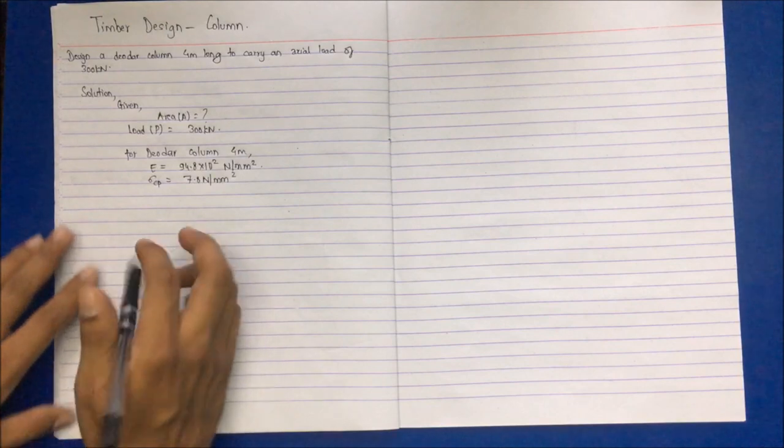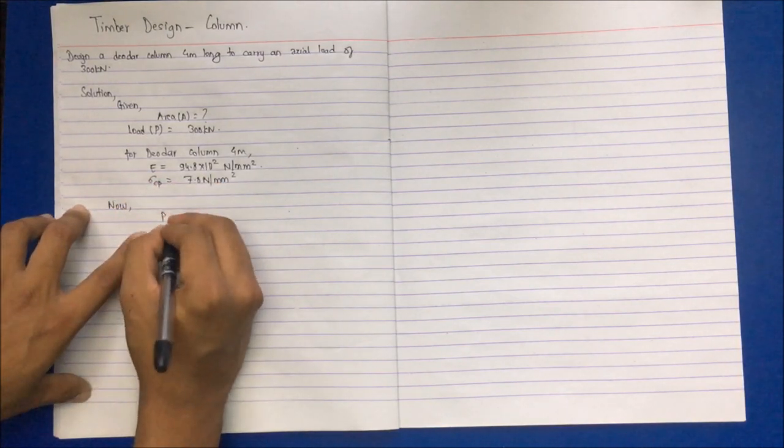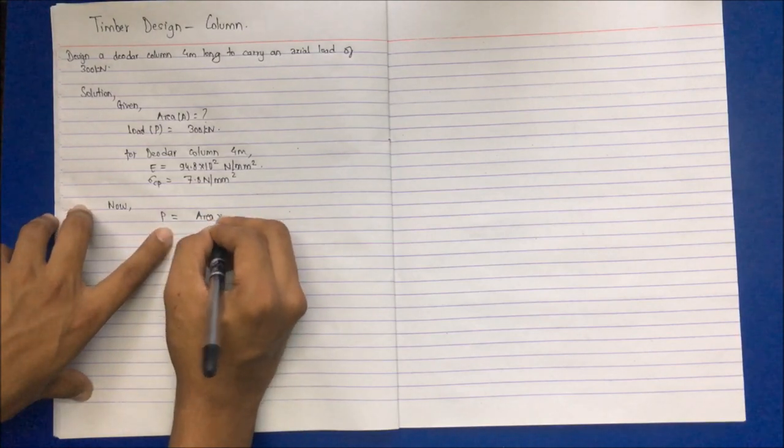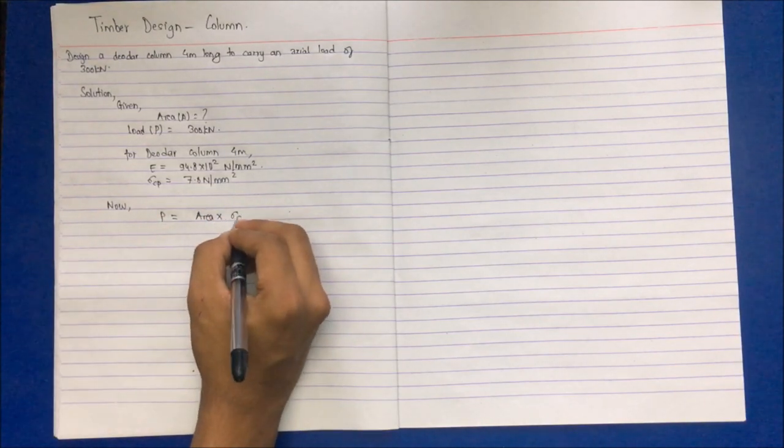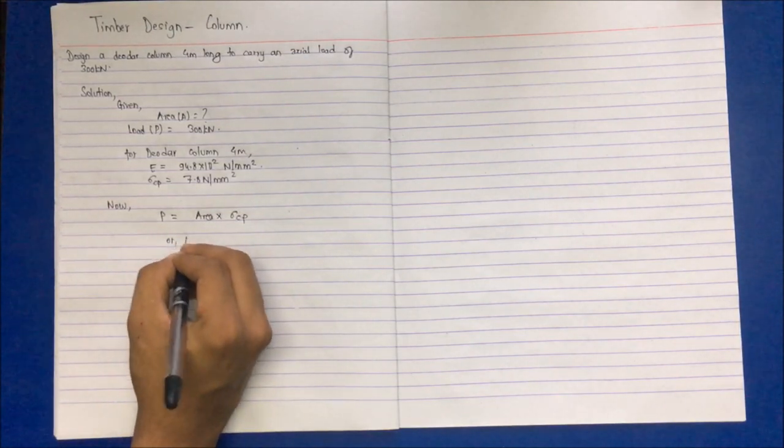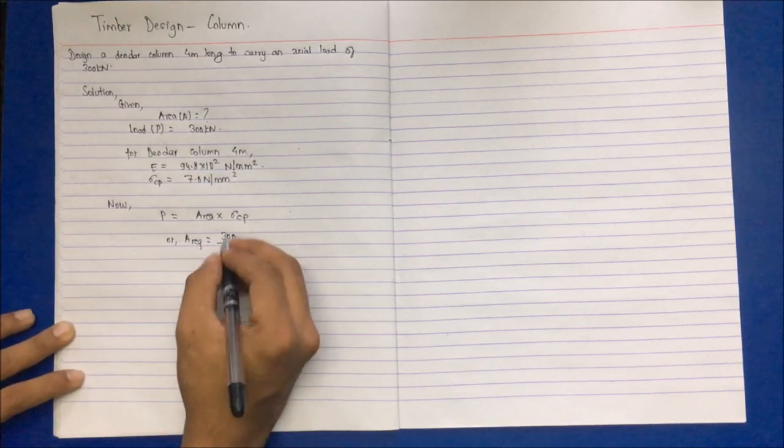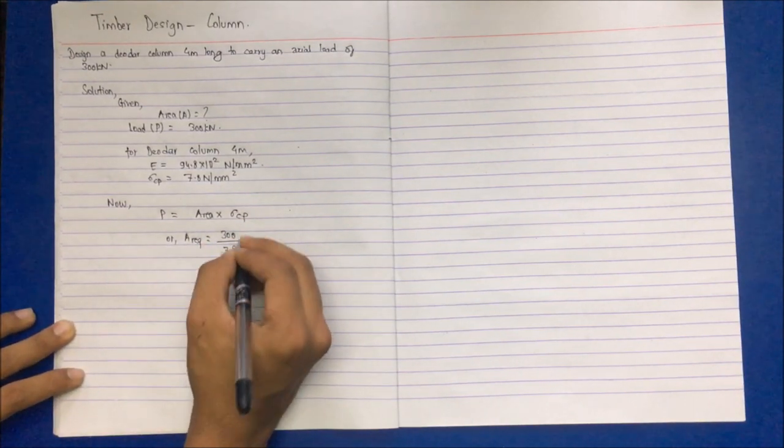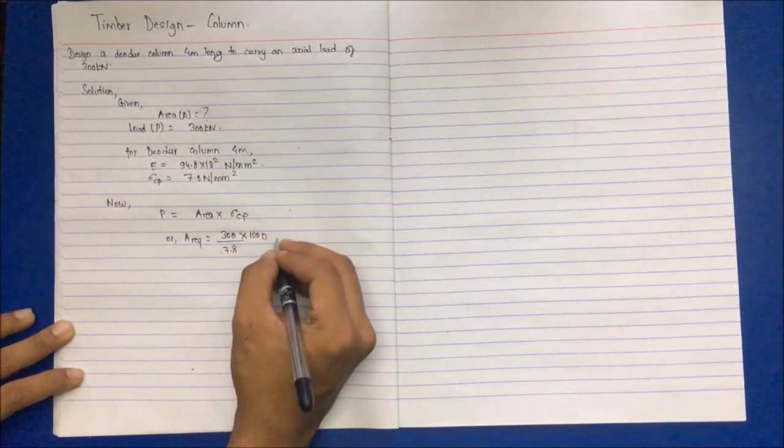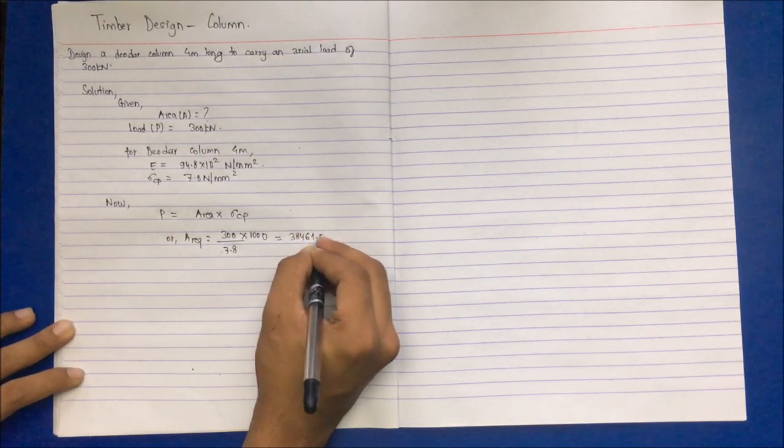Now for area, we have the formula: load equals area multiplied by sigma cp. We get area required as 300 kilonewton by 7.8, multiplying by thousand we get area required as 38461.5 mm square.